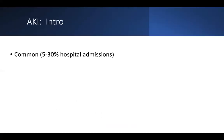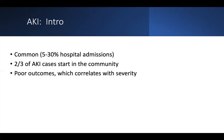AKI is super common — about five to 30% of hospital admissions, depending on the data. Two-thirds of cases start in the community, so often this is a primary care issue, and when patients end up in the hospital, the AKI may have been brewing for a while. It has a strong association with poor outcomes, and the more severe the AKI, the higher that association. It leads to substantial increases in healthcare costs, and a lot of AKIs are preventable.